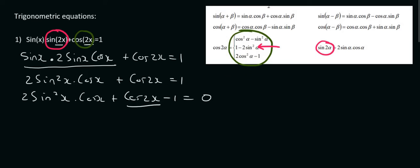Because then what happens is the following: we keep it as 2sin²(x)cos(x) plus, and cos(2x) is going to change to 1 - 2sin²(x) - 1 = 0.